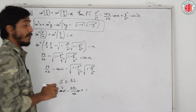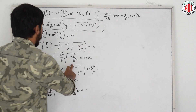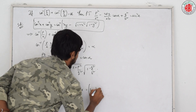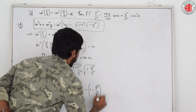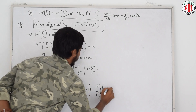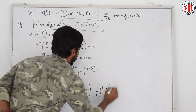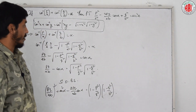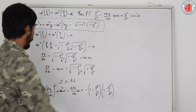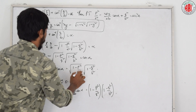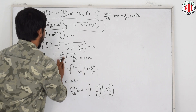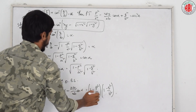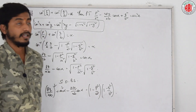The left side is of the form a minus b whole square: that is pq by ab whole square plus cos square alpha minus 2pq by ab cos alpha. If we square the right side, both square roots get cancelled. What we are going to get is 1 minus p square by a square into 1 minus q square by b square. Note: this should be p square by a square, not q square — don't get confused.